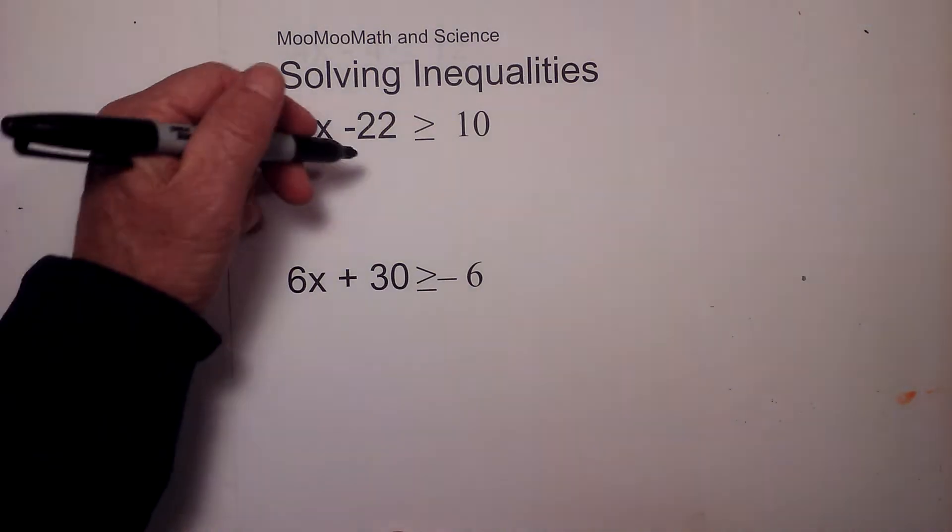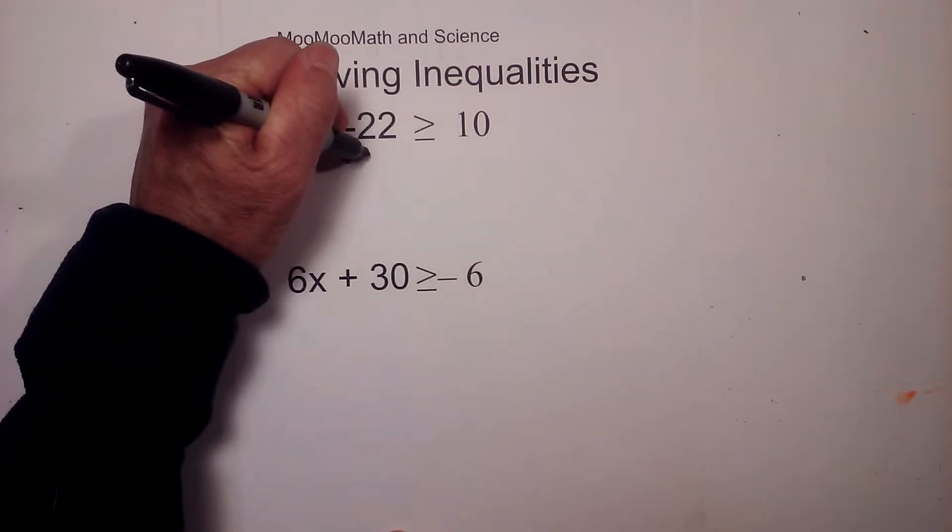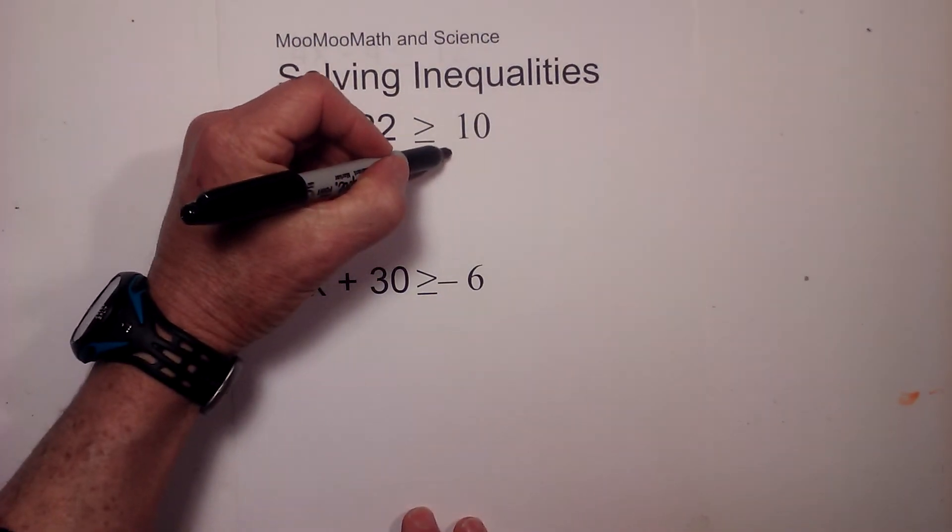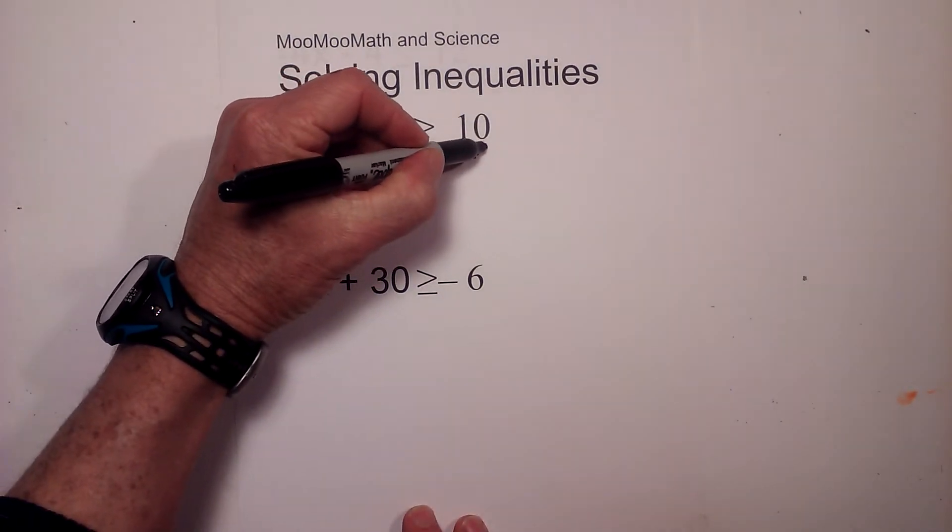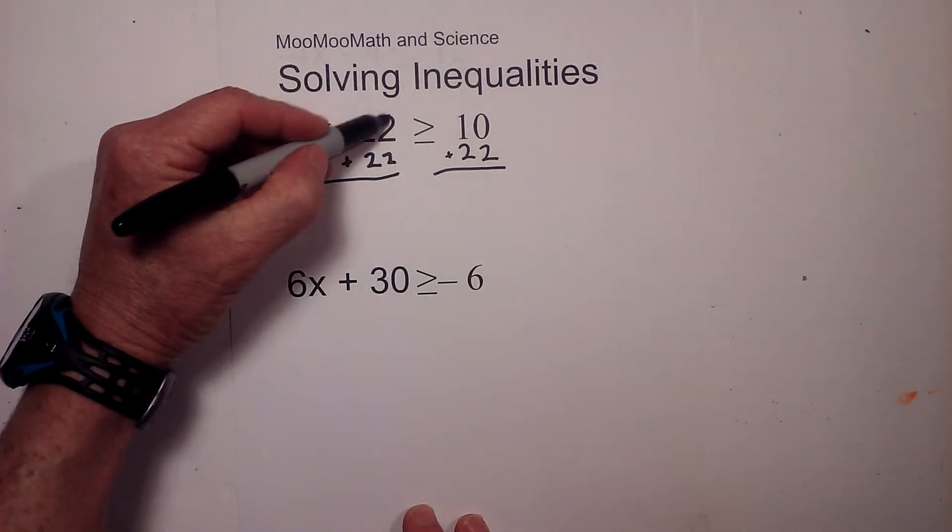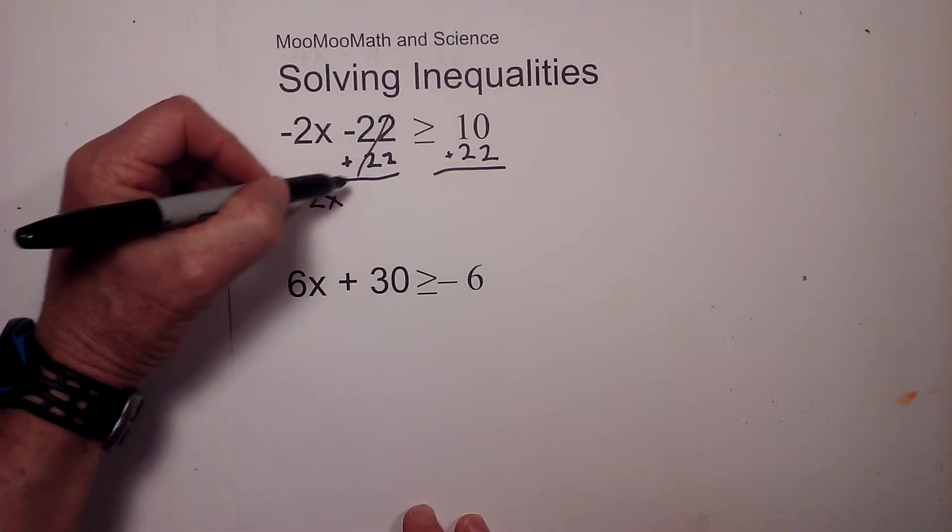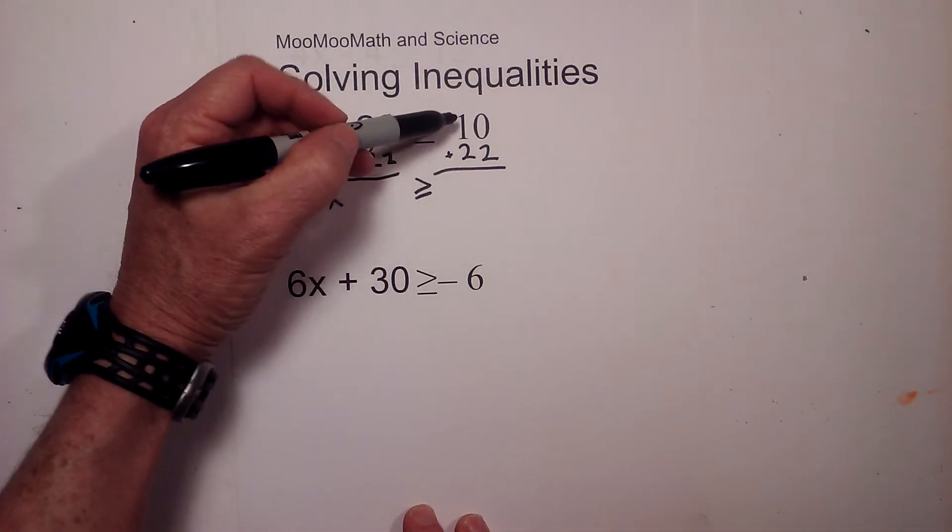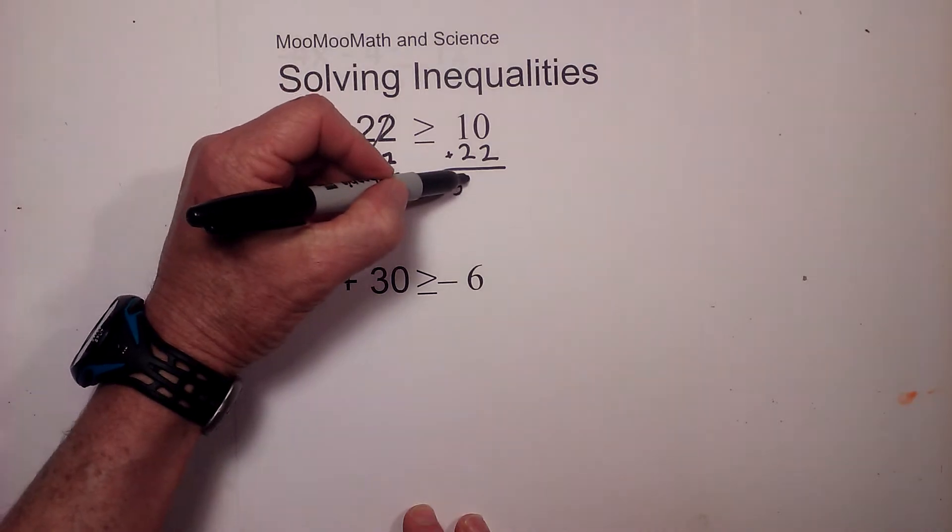So let's get started first by adding 22 to both sides. If we add 22 to both sides that will eliminate the 22. So I will add 22 on this side, draw a line, bring everything down. And so these cancel. The negative 2x comes down and we have greater than or equal to 10 plus 22 is 32.